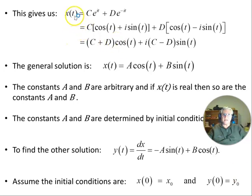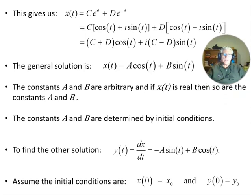This gives us x of t is this object. So a linear combination of solutions is also a solution. Euler's equation: we can write e^{it} is cos t plus i sin t. e^{-it} is cos t minus i sin t. Let's combine the constants (c + d) times cos t plus the imaginary number i (c - d) sin t.